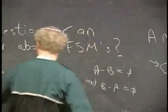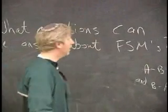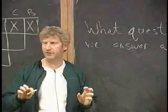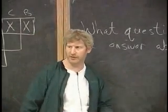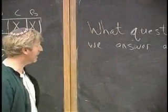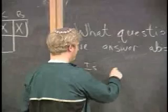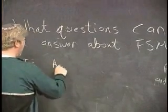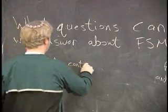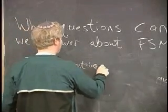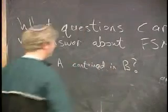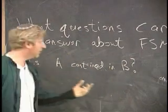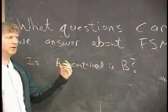What else? Yes. Because you know what to fix on and it's deterministic and you know the edges are there. How about this? How about is a regular set A contained in a regular set B? So you get two regular sets. Does everything, is every string that A accepts also accepted by B?